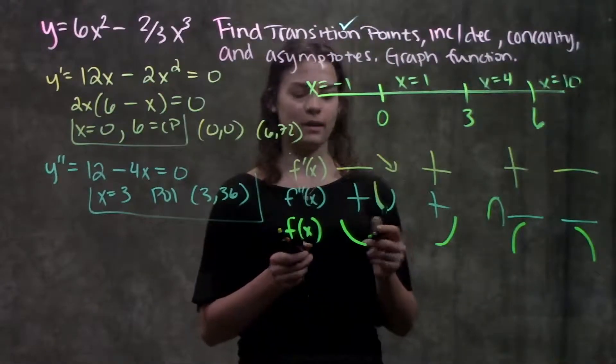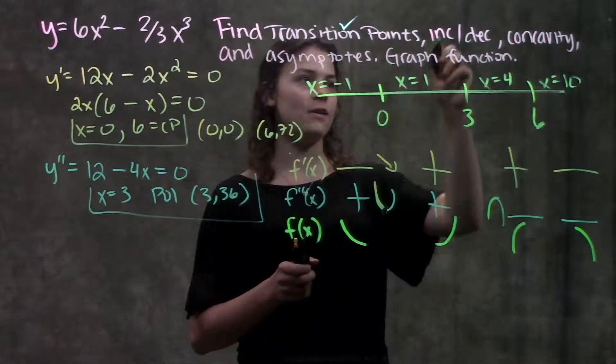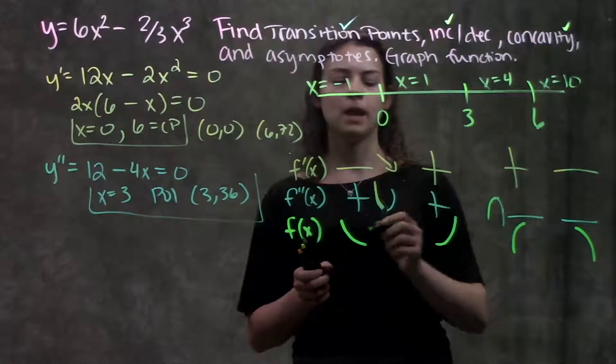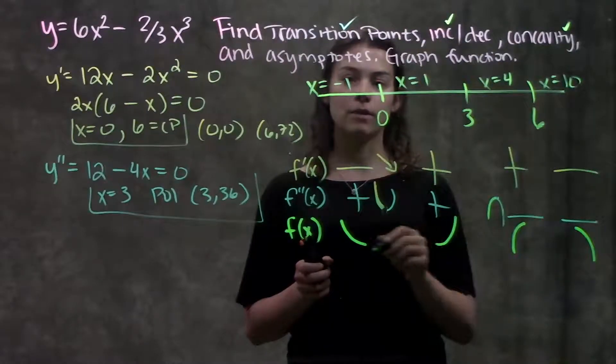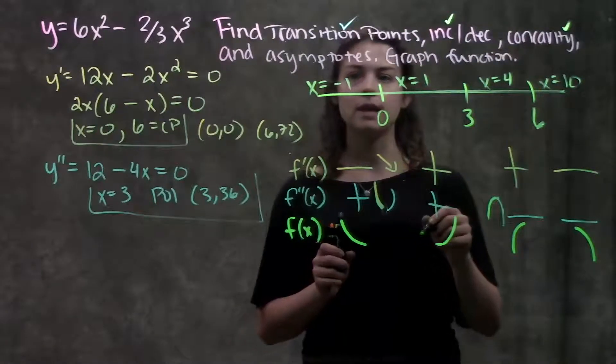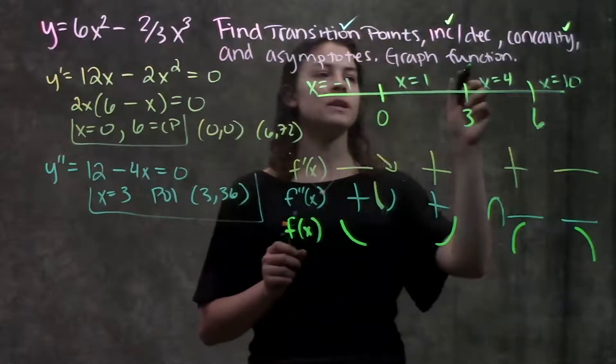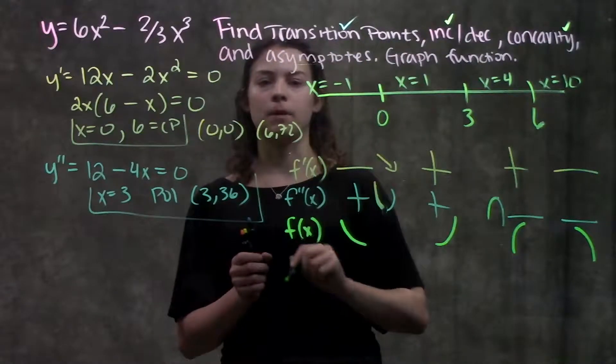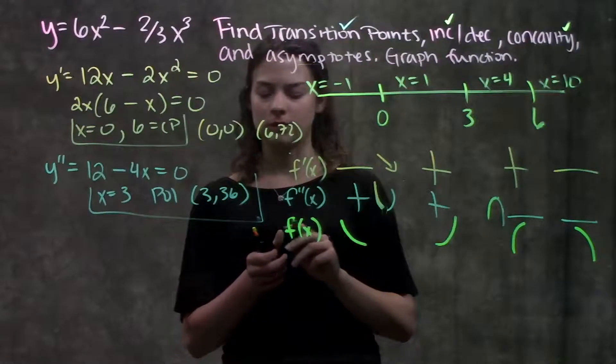I have my increasing and decreasing intervals and my concavity, and I know what my original function looks like. Before I sketch it, I'm going to find the last part: the asymptotes.